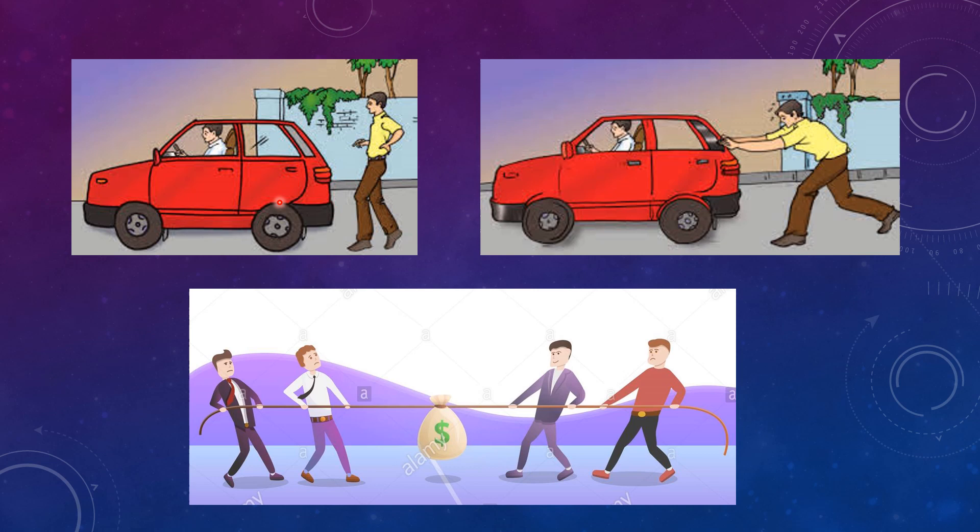In this picture, the car is standing here and the boy is also standing here. Car is not moving and the motion of the car is not happening. And in this case, the boy is pushing the car and the car starts moving. That means the change in the motion of an object and the force has happened here.